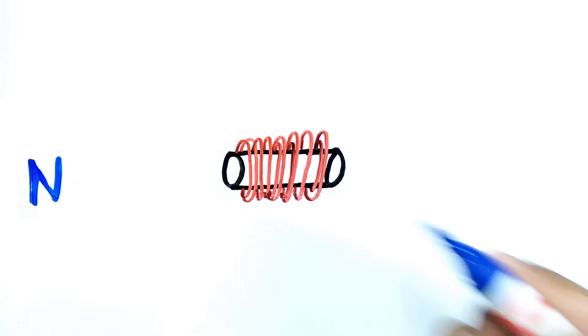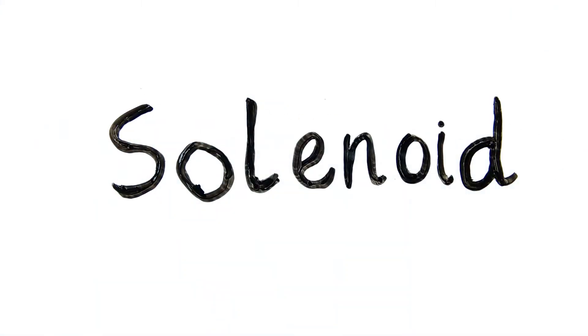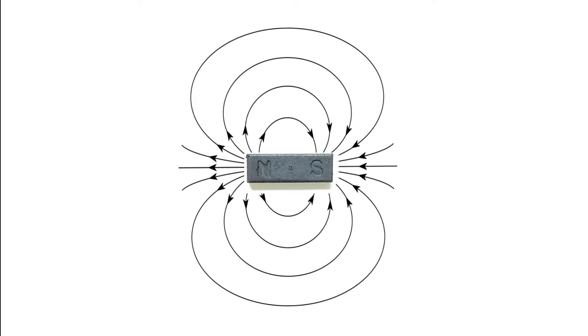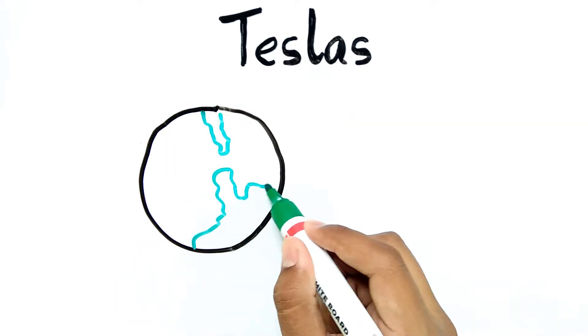One way of measuring the strength of the magnet is by measuring the angles between the two consecutive field lines. But more accurately we measure it with a unit called teslas.